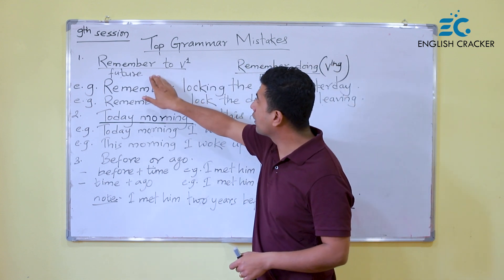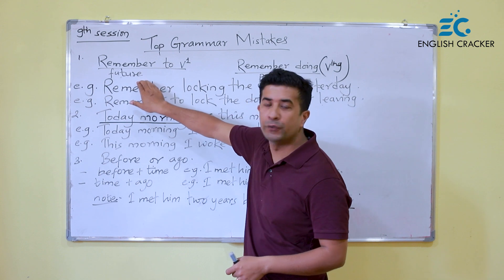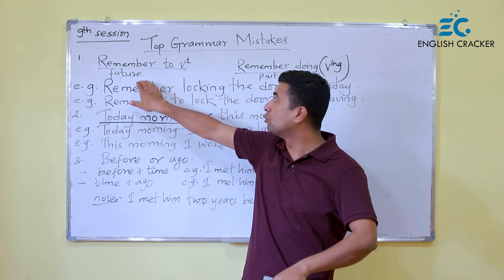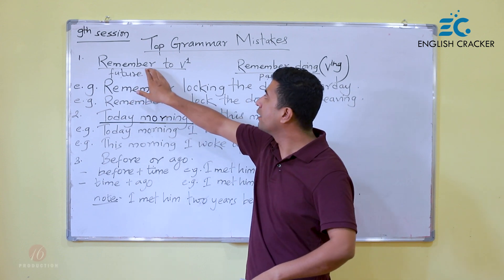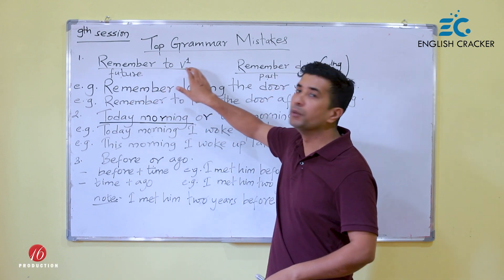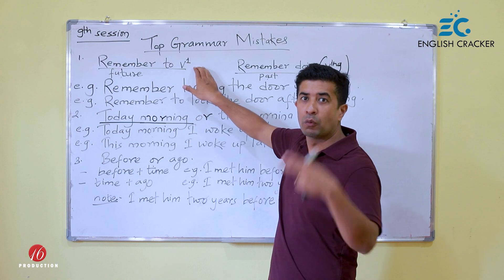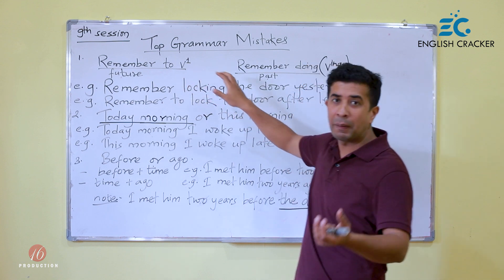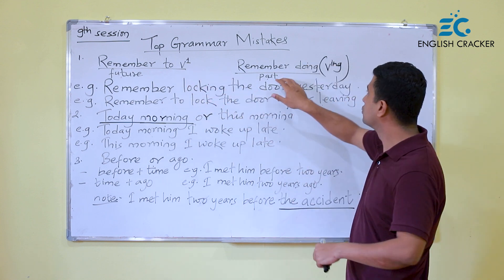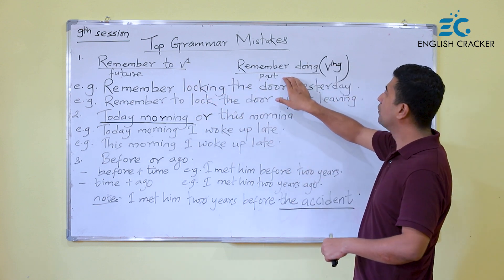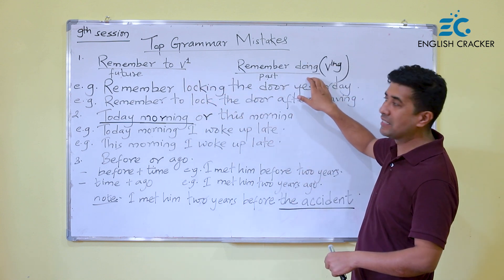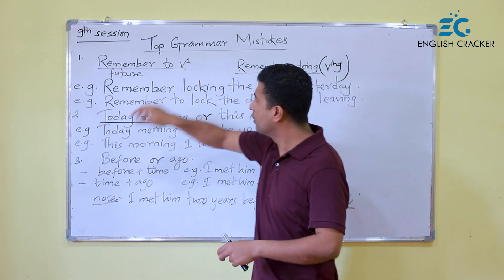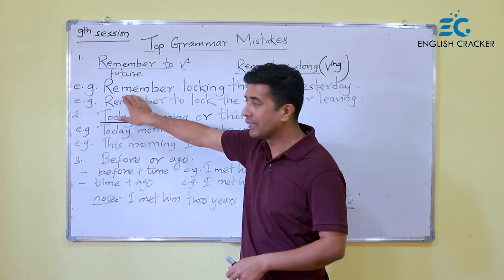So, when you are talking about the future, remember 'to + verb' — that is 'remember to V1'. But when you are going to talk about the past, use 'remember + V-ing'. Let me use these two in a sentence.